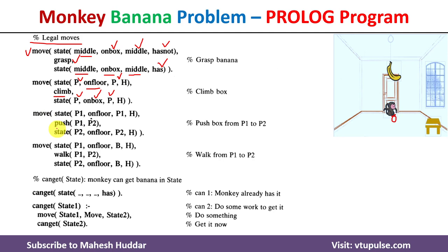The next move is push. To execute push successfully, both the monkey and the box should be present at the same position — that is P1 here and P1 here. We do not care whether the monkey has the banana or not, but one more condition is that the monkey should be present on the floor. Only then can it push the box from position P1 to position P2. The position of the monkey will go from P1 to P2, and the box will also go from P1 to P2. The monkey remains on the floor.